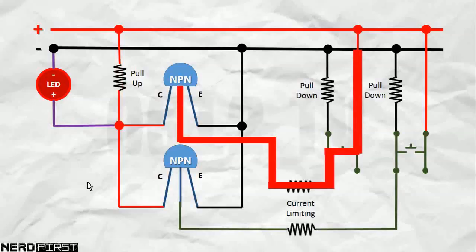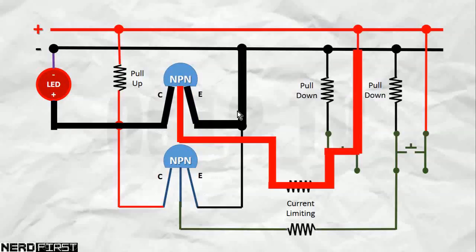Anytime we close a single switch, we are basically closing a switch here, and allowing our ground to flow through. This overpowers our pull-up, and our LED will switch off. Let's take a look at our breadboard.